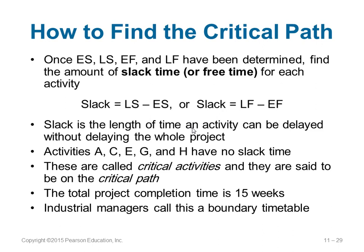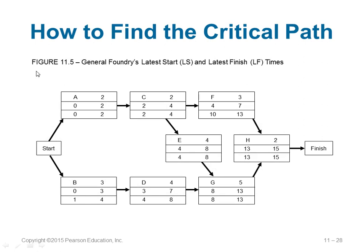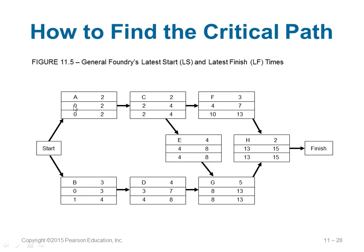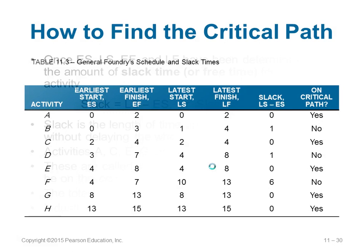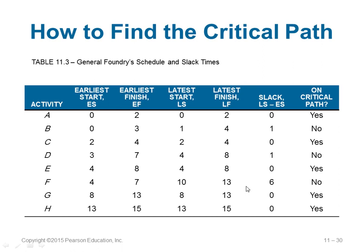Slack time (free time) is LS − ES or LF − EF (both give the same value). Slack is the length of time an activity can be delayed without delaying the whole project. For activities A, C, E, G, and H, the slack time is 0 — their latest start and earliest start are the same (e.g., A: 0 and 0; C: 2 and 2; E: 4 and 4). Activities with zero slack are critical activities, and the path containing all critical activities is the critical path. The project will take 15 weeks to complete. This is summarized in a table showing ES, EF, LS, LF, slack, and whether each activity is on the critical path.